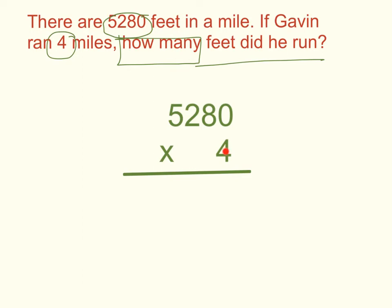We start out in our ones place — 4 times 0 gives me a product of 0. Next we move to our tens place — 4 times 8 tens gives me 32, so we put our 3 above our hundreds and our 2 in our tens place. Next we move to our hundreds place — 4 times 2 is 8, plus 3 gives me 11 — put our 1 in our hundreds place and carry our other 1 to our thousands place. Finally, we move to our thousands place — 4 times 5 is 20, plus 1 is 21 — put our 1 in our thousands place and our 2 in our ten thousands place. Our final product is 21,120.